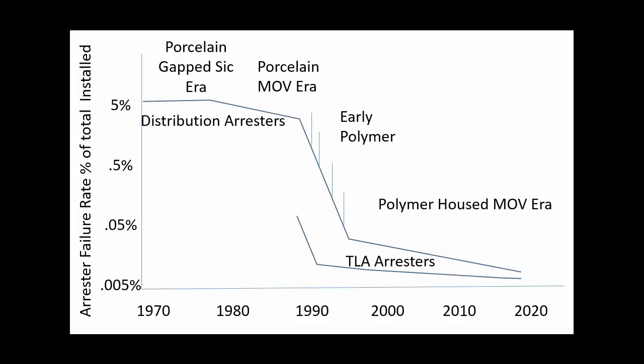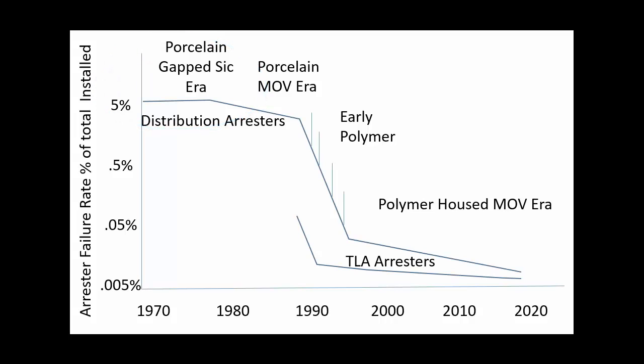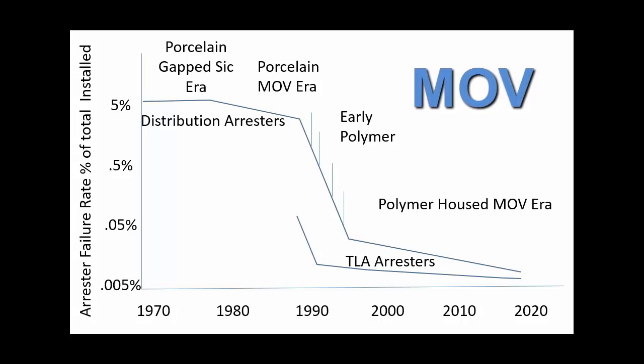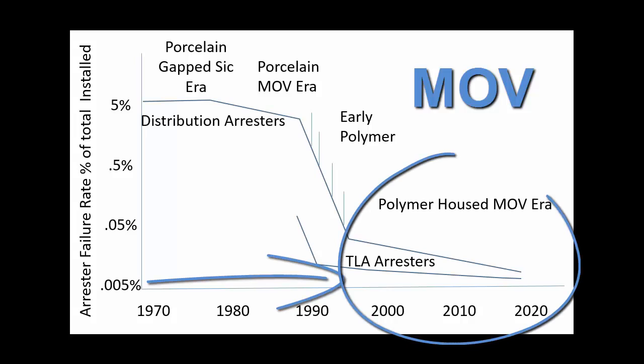One of the biggest concerns of those using transmission line arrestors for the first time is the long-term reliability and maintenance of the arrestor. There was a time when gap silicon carbide arrestors had questionable reliability. However, in this mature MOV arrestor era, reputable suppliers have consistently achieved arrestor failure rates that are close to that of the insulator in the PPM range. Look at the reliability record of your existing equipment MOV type arrestors — you will be surprised at how low a failure rate you are experiencing if you remove the old Porcelain gap arrestors from that population.